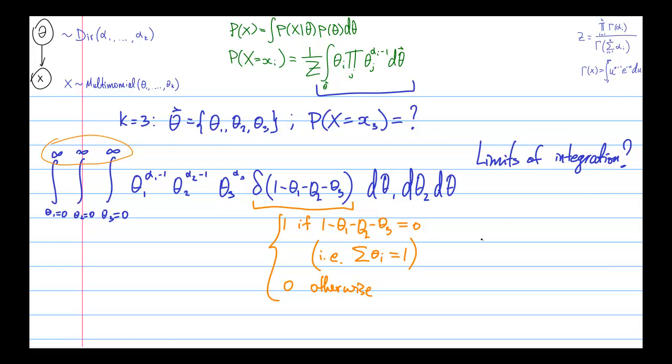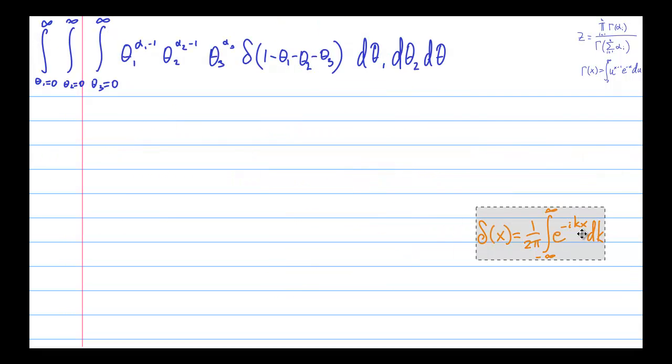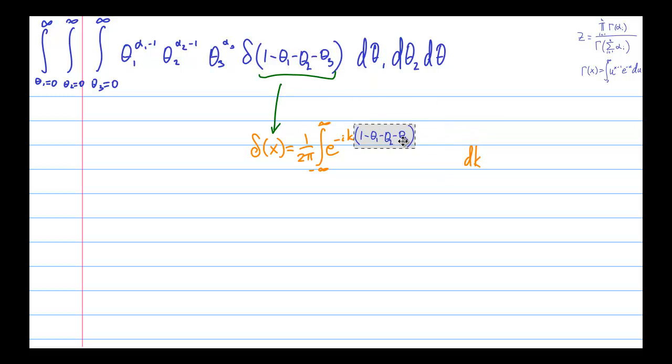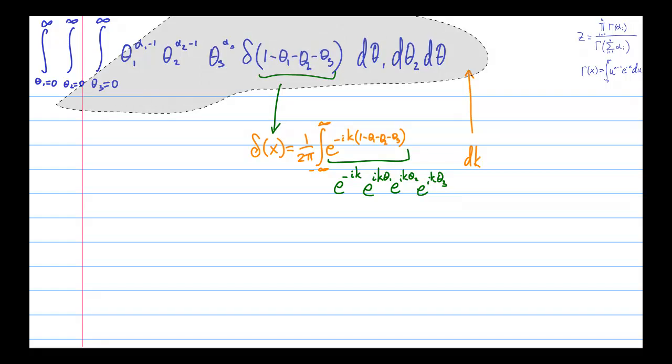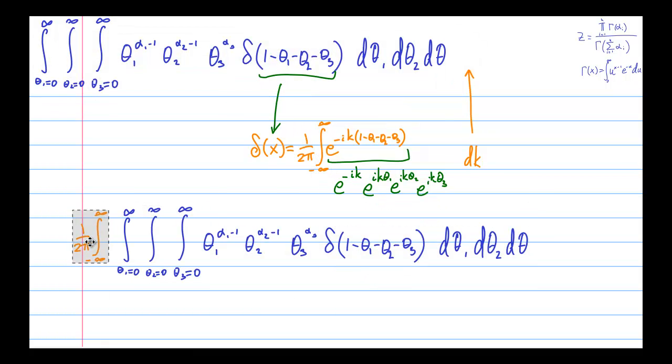Okay, so now we have this delta function inside the integral. What do we do with that? Well, what we do is we write this delta function as a Fourier superposition. So we can express the delta function as an integral over a Fourier variable k, let's say. And put this form of the delta function inside our integral. And what we can do is we can write the exponent in the orange integral in a very explicit form. We'll break it up into the separate parts, e to the minus ik, e to the ik theta 1 and so forth. And we'll put that and the integral over k inside the original integral.